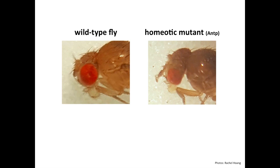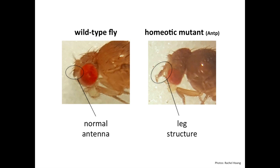In this example, you can see the normal structure of the antenna on the head of a wild type fruit fly on the left. But in this fly on the right, that has a homeotic mutation, you can see that the antenna on the head has now been transformed into a leg structure — a structure usually only found on the thorax of the fly. Striking homeotic phenotypes like this are part of why the Hox genes have garnered so much interest.